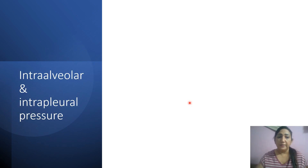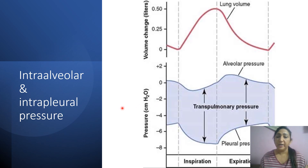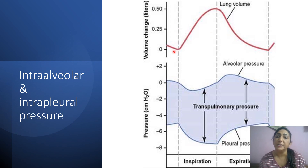We are going to discuss the intra-alveolar pressure and the intra-pleural pressure. Here we can see a graph. This is the tidal volume — this is the inspiration and this is the expiration. The inspiration is this upward stroke; the expiration is a downward stroke. The tidal volume is 500 milliliters.